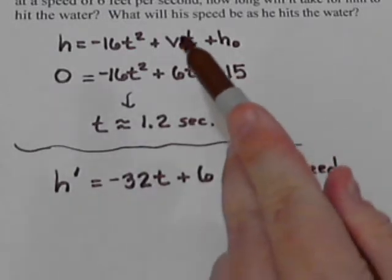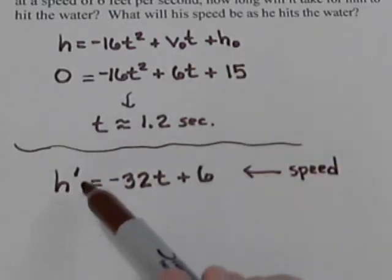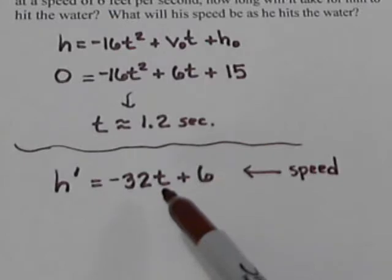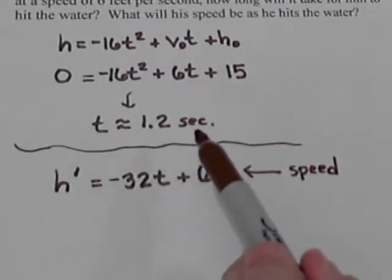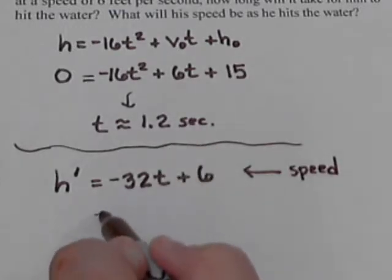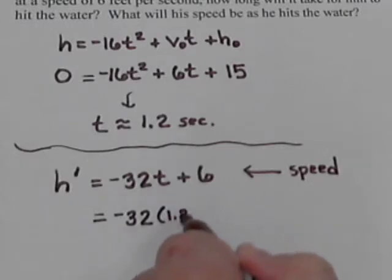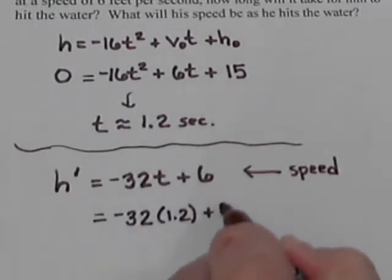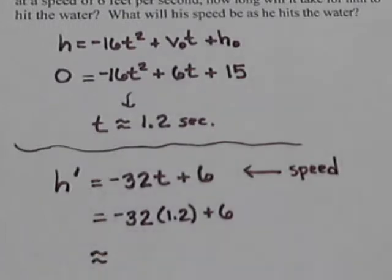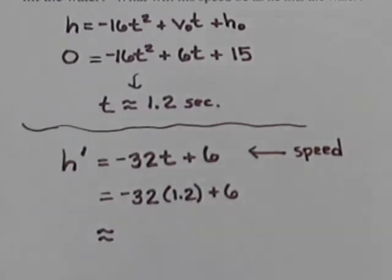And so to calculate the speed as he hits the water, well, h' tells us what the speed is, so we need to plug a time in here. Well, we know it's going to take him 1.2 seconds to hit the water. So to calculate the speed, we're going to put 1.2 in for the t and calculate that out.